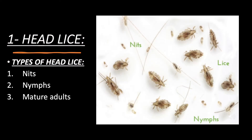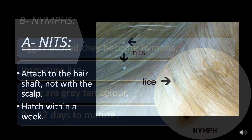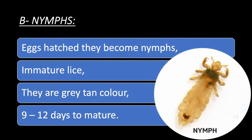Types of head lice: Nits are attached to the hair shaft, not the scalp, and hatch within a week. The second type is nymphs — hatched eggs that become immature lice. They are gray-tan in color and take 9 to 12 days to mature.